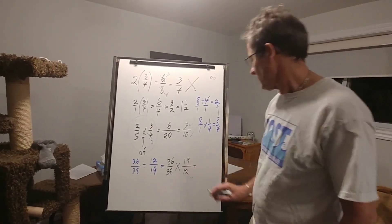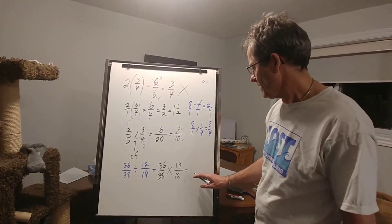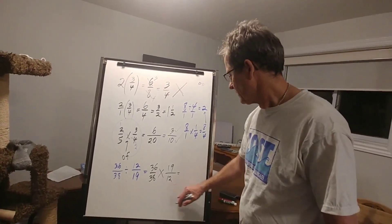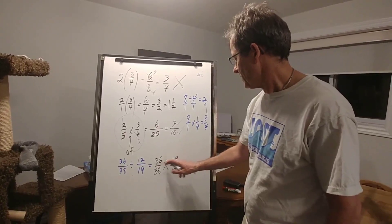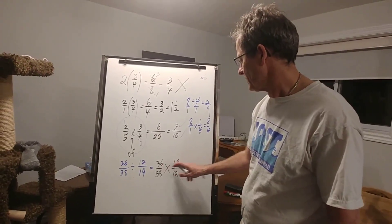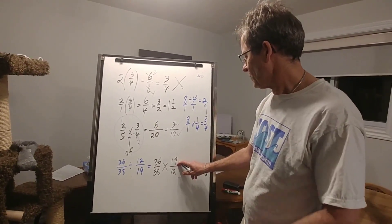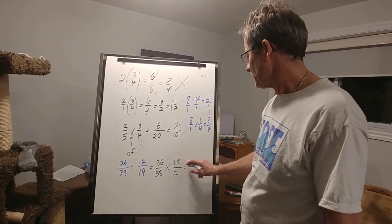Now, if I don't do any reducing, I'm going to get huge numbers. Let's see what we've got. 36 times 19 is almost 36 times 20, with 1 less 36. So 36 times 20, 720.